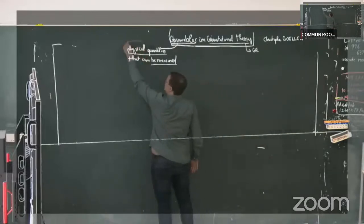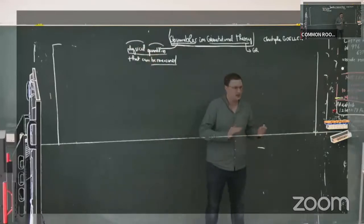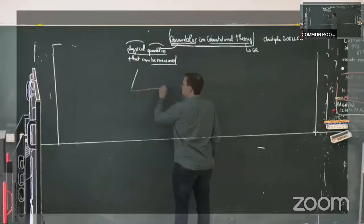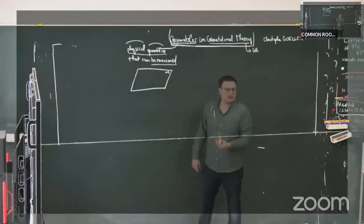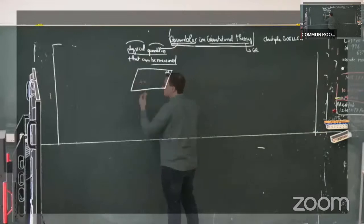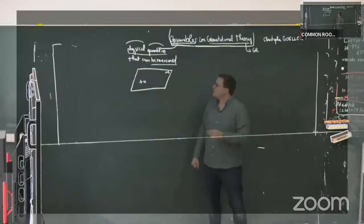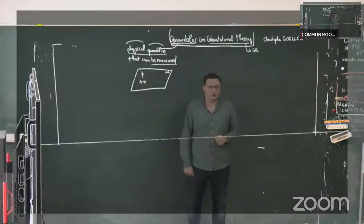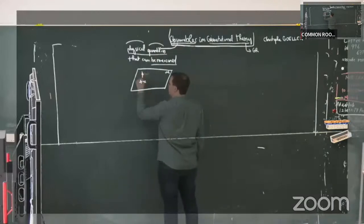By quantities, I mean any field or any object living on spacetime. So let's say your spacetime is a manifold M. What can be understood as a quantity, for example, is just a position x on spacetime — something we could expect to be measurable, just where we are on spacetime. But it can also be any field, such as matter or electromagnetic fields, located at that point or wherever you want on spacetime.